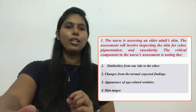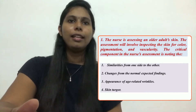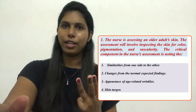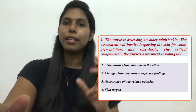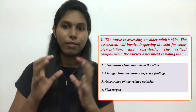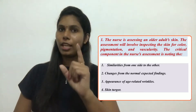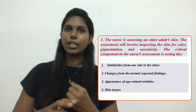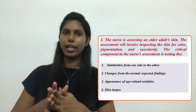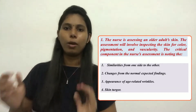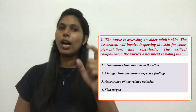Shall we move to a practice question to see how scenarios can appear in integumentary system diseases? Here, a nurse is assessing an older adult's skin. The assessment involves inspecting the skin for color, pigmentation, and vascularity. The question asks: what is the critical component in the nurse's assessment? The keyword is that this is an older adult. The options are: similarities from one side to the other, changes from normal expected findings, appearance of age-related wrinkles, and skin becoming darker.